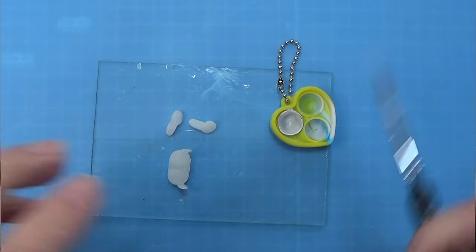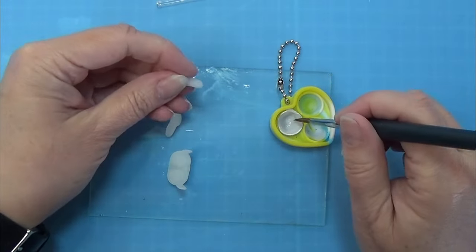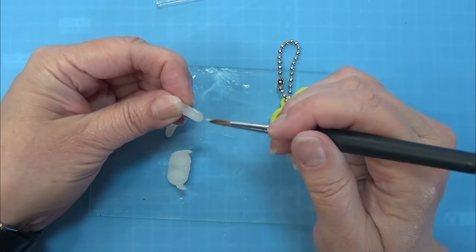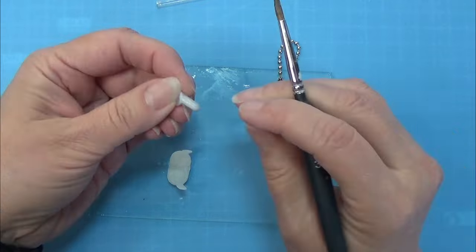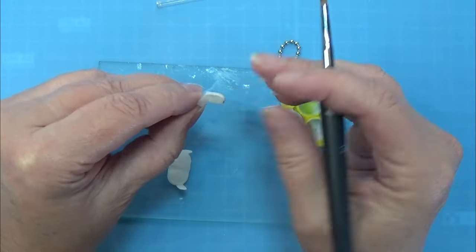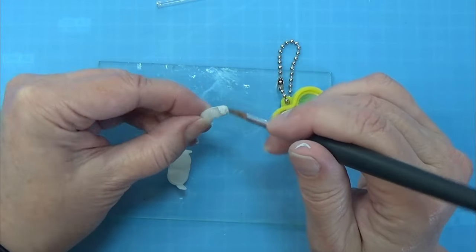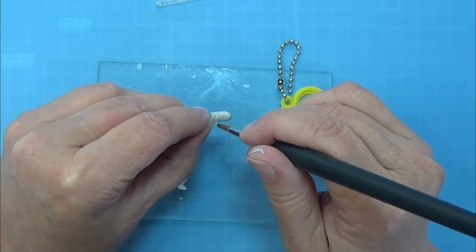Then I printed that on my resin printer and now I am just going to paint it into a grey color. Here I am painting it into a kind of too dark grey color so I am going to paint it over again later.